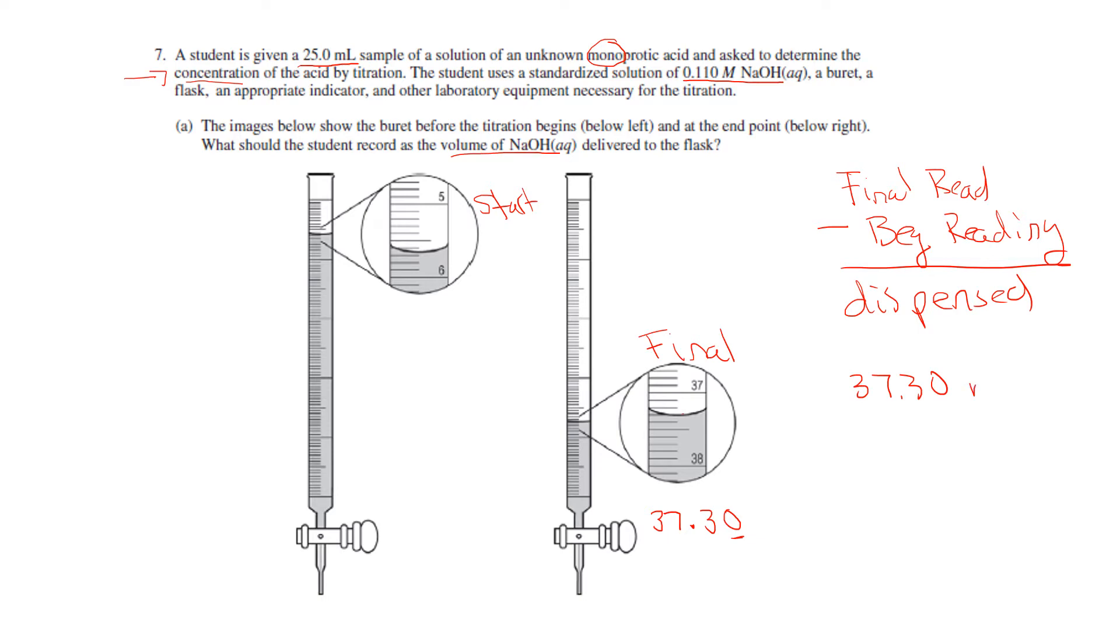Burettes are usually—I don't see anything here, but they don't tell you—they're usually in milliliters. My starting is going to be somewhere between 5 and 6 milliliters. So there's 5, that's 5.5, 5.6. It's not right on 6 or it's not right on 7, so I'm going to estimate it is 5.65. So there's my starting volume.